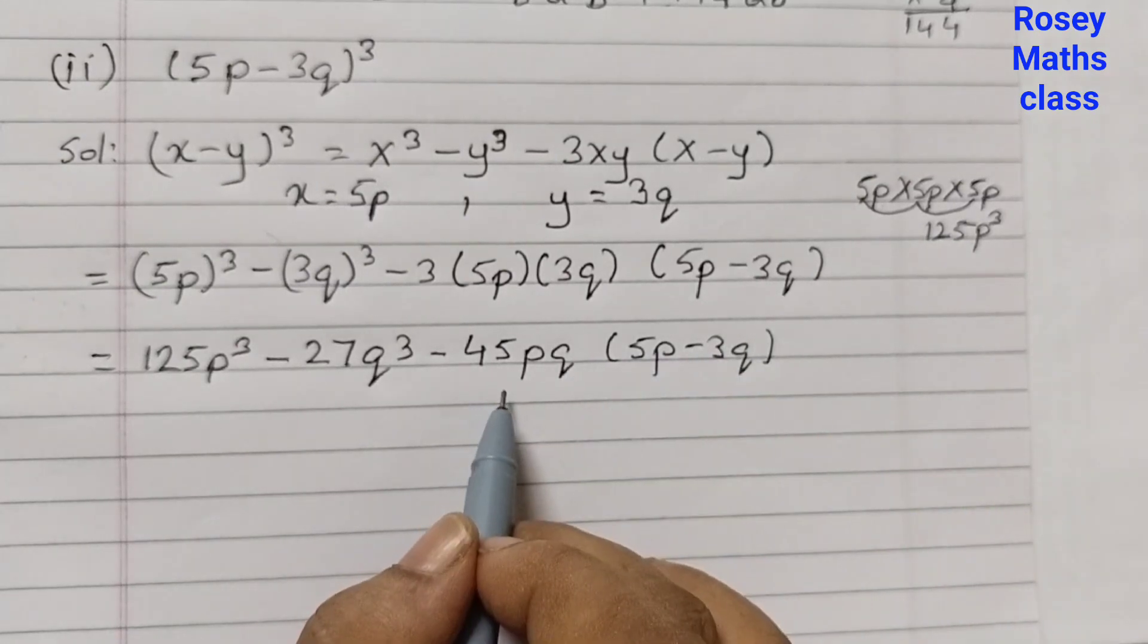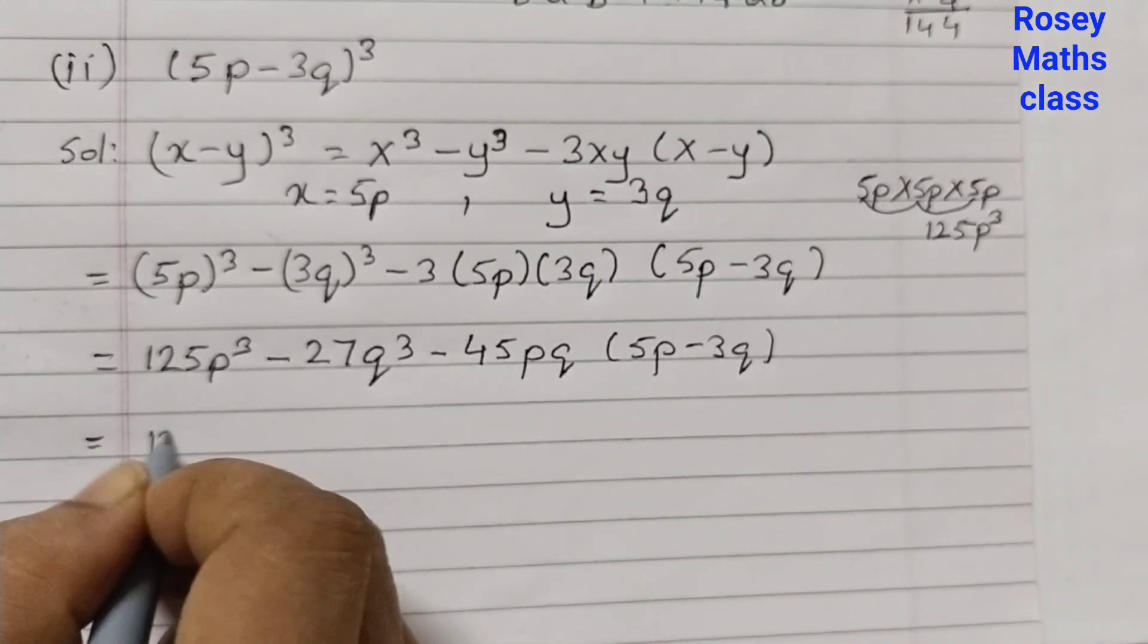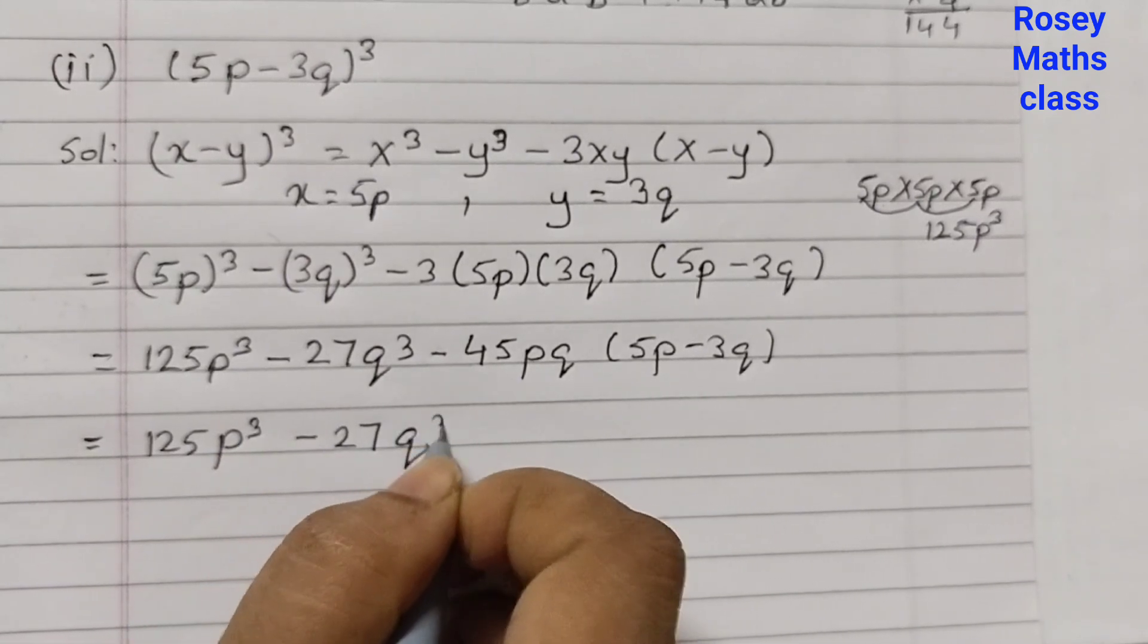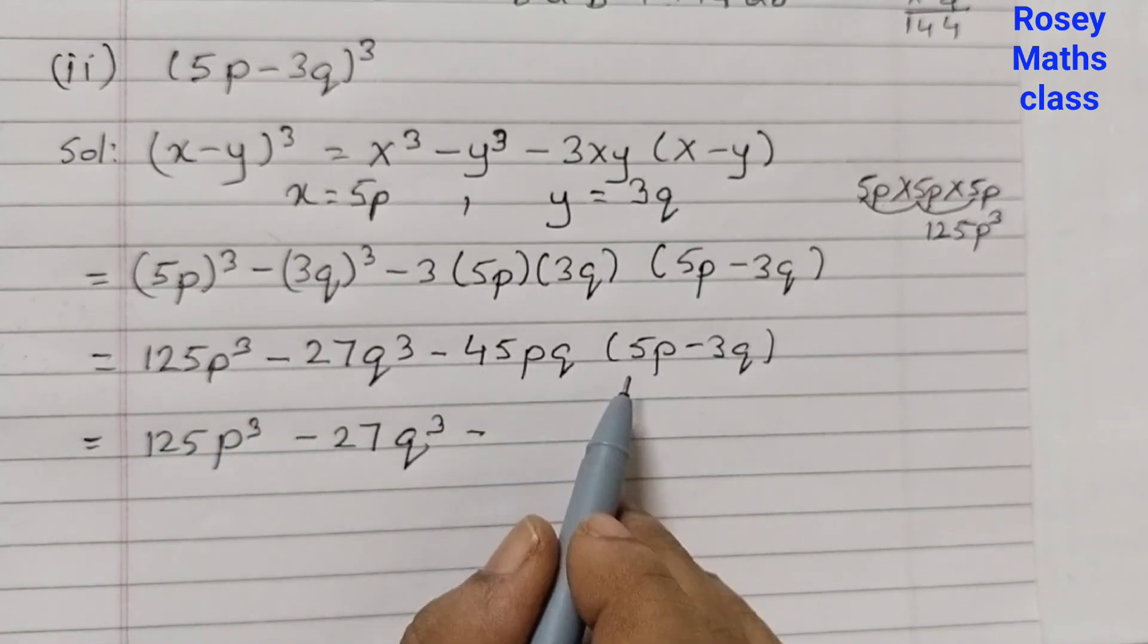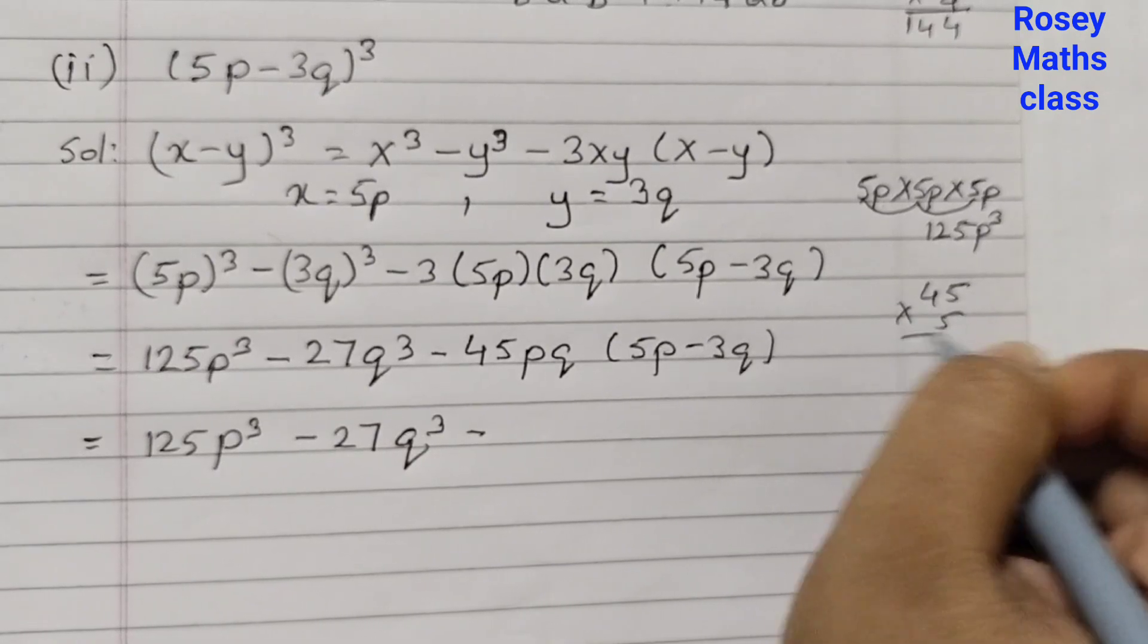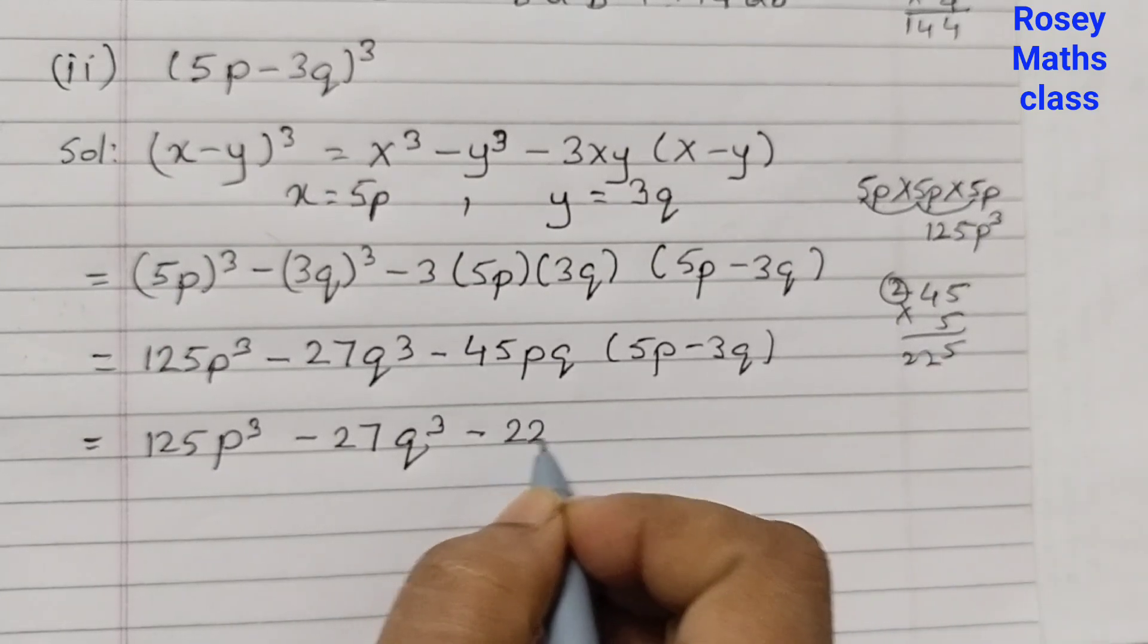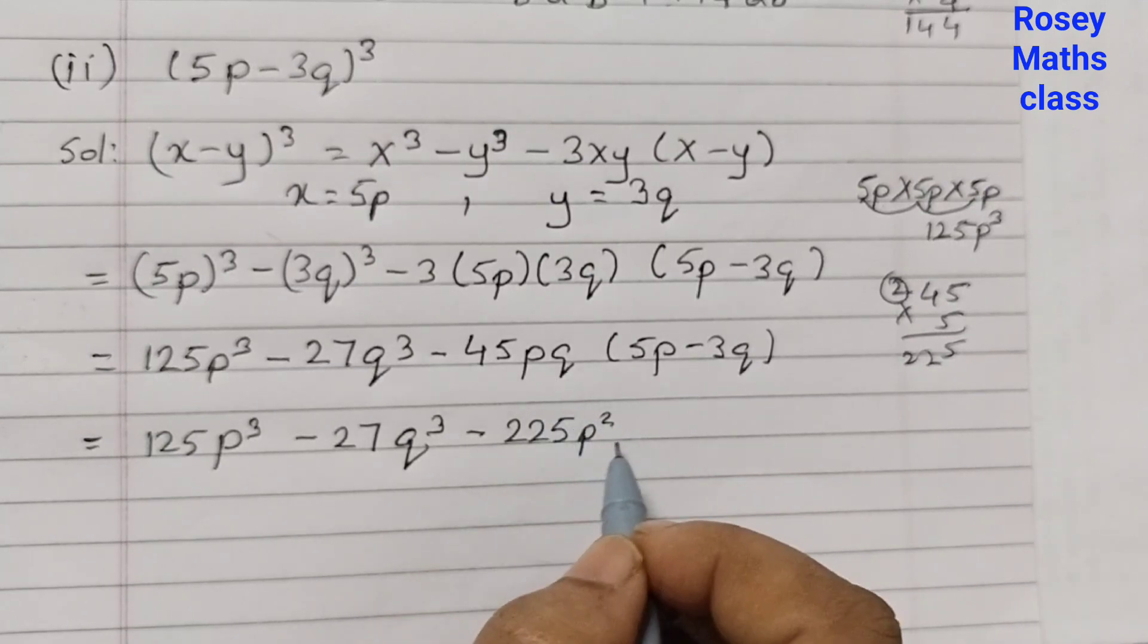In the next step, we are going to open up this bracket and distribute this. So 125p³ remains as it is, minus 27q³. These two terms come down as it is, minus 45 into 5: 5 times 5 is 25, 4 times 5 is 20, so 225p²q.